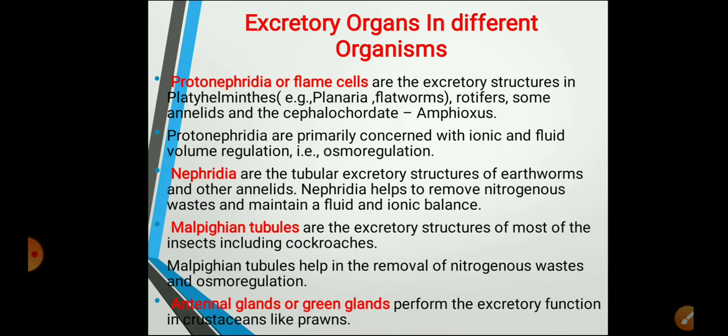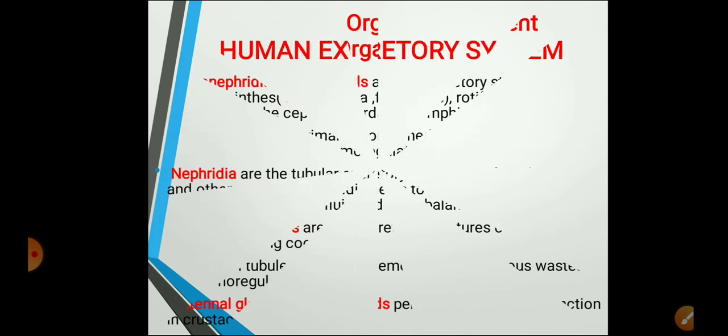The last type of excretory organs are the antennal glands or green glands, which are found in aquatic annelids and crustaceans, like prawns. Remember the names of these different excretory organs found in different organisms: protonephridia (also called flame cells), nephridia, Malpighian tubules, and antennal glands.